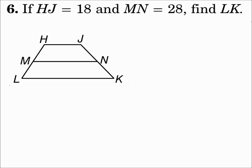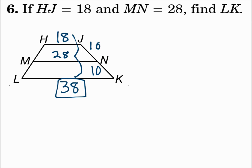Number six: if the measure of segment HJ equals 18 and the measure of segment MN equals 28, find the measure of segment LK. Here you know the median and are looking for the other base. Use the difference method: from 18 to 28 you're adding 10, so add 10 more from 28 to get 38. The measure of segment LK is 38. If you're looking for the median, use half the sum of the bases; if you're looking for a base, use the equal difference from the median.